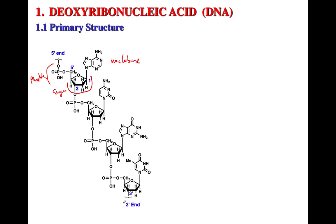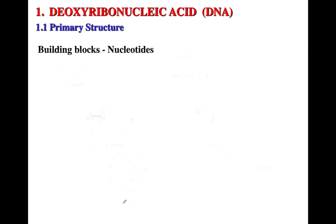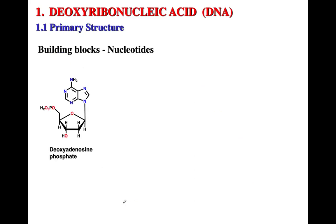This is just another representation of the primary structure, showing the sugar-phosphate backbone. The building blocks of these nucleic acids are the nucleotides. In the case of DNA, you have the deoxyribose sugar — DNA has a deoxyribose, whereas RNA has a ribose.